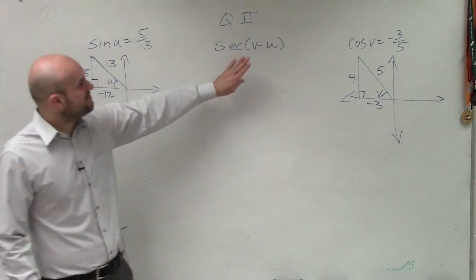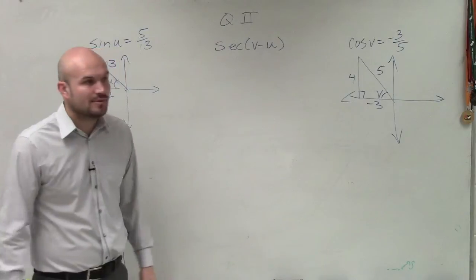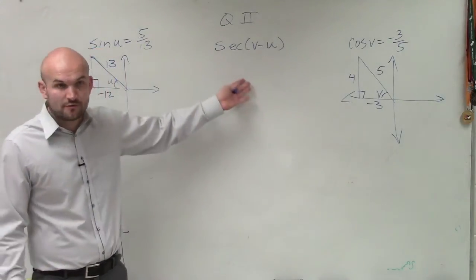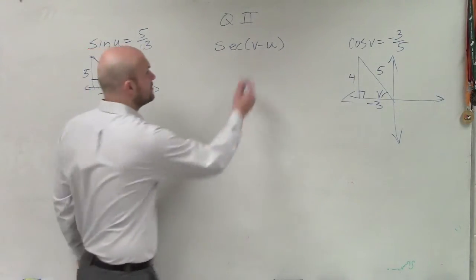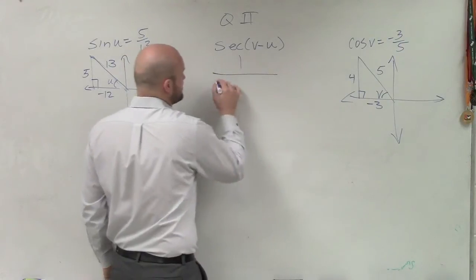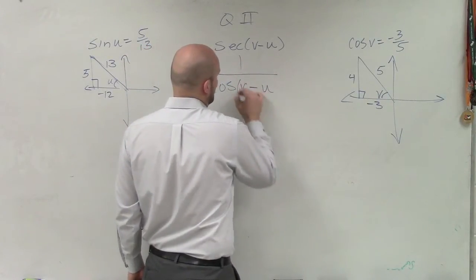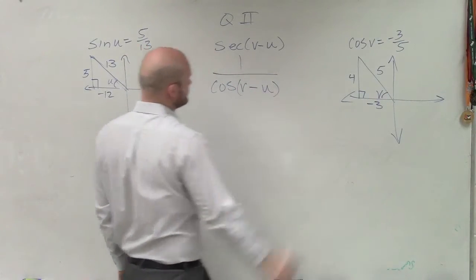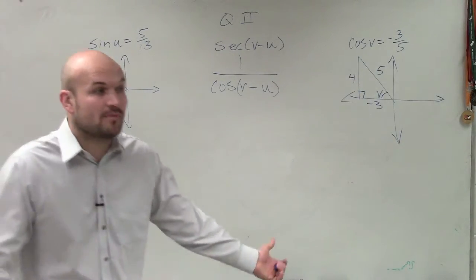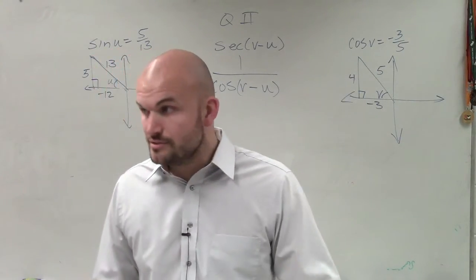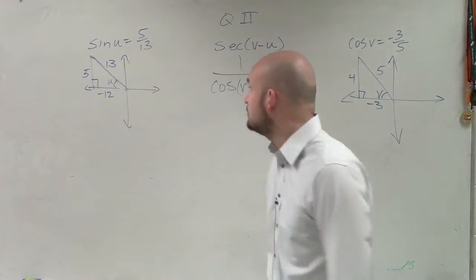So now we need to evaluate for secant. The only thing we know about secant is the reciprocal — we don't have a formula for this. But we do know that secant is the reciprocal of cosine of (v minus u). And we do have a formula for cosine of (v minus u), so we can just go ahead and plug that in.